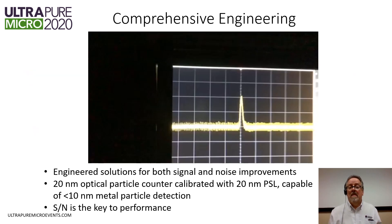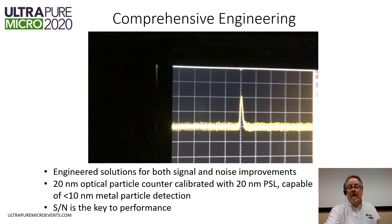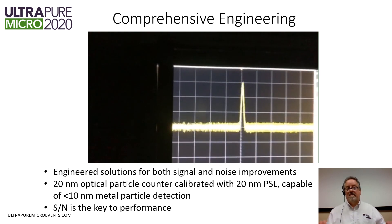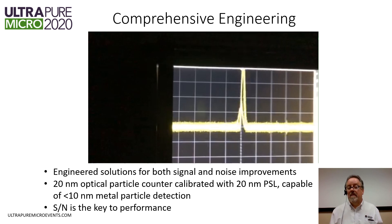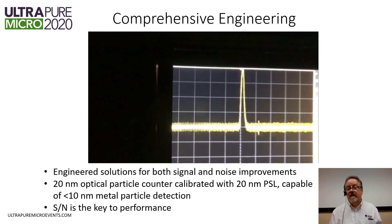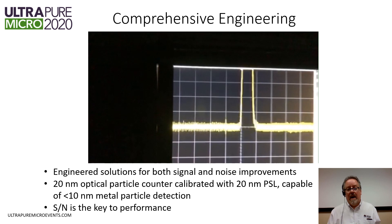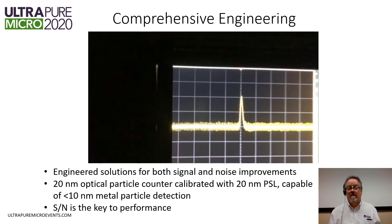This drives us to take comprehensive engineering improvements, finding solutions to both increase signal and reduce noise. Here is a video of 20 nanometer polystyrene latex spheres we use for calibrating our particle counters. As they pass through the particle counter, you can see the noise as the fuzziness of the line to the left and right of the particle signal — that defines how small we can see. We need to make sure our particles are well above that noise floor. In this case, at 20 nanometers, we're getting a lot of signal compared to our noise. Even though these are calibrated with 20 nanometer PSLs, this technology can see metallic particles smaller than 10 nanometers due to the difference in refractive index. Signal-to-noise is really the key performance metric.